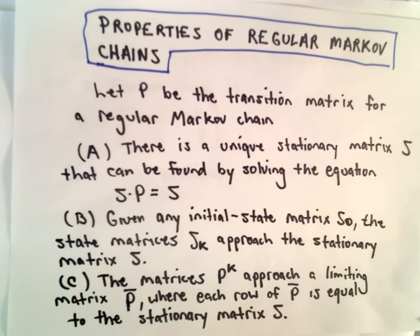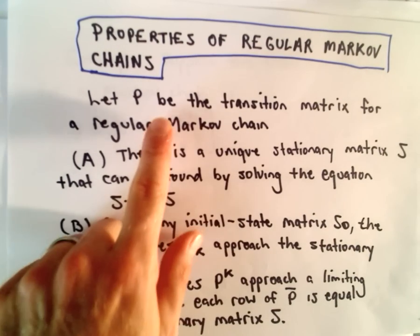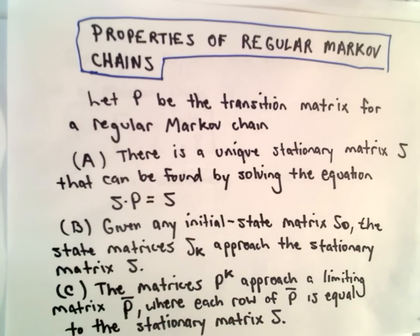So first we're going to discuss a few properties. We're going to let P be the transition matrix for a regular Markov chain.